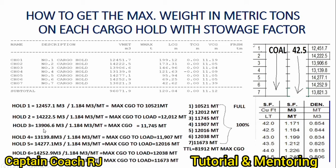For hold number two, do the same thing: 13,906.1319 cubic meters, all divided by 1.184 cubic meters per metric ton, giving the result in metric tons. Now, for the hold-wise total cargo, arrange holds one through seven and add them all. You will get 81,912 metric tons as the maximum cargo to load. At this point, the percentage for all holds is 100%.